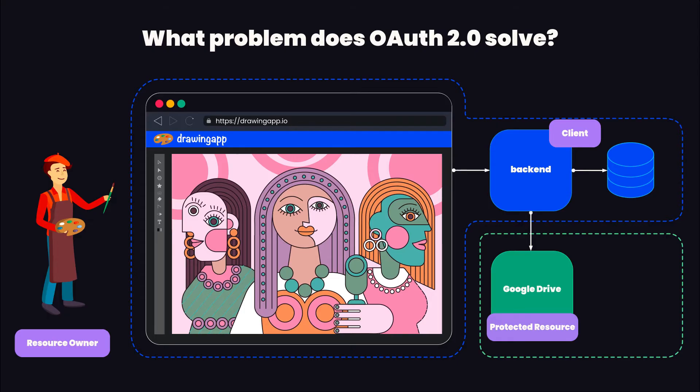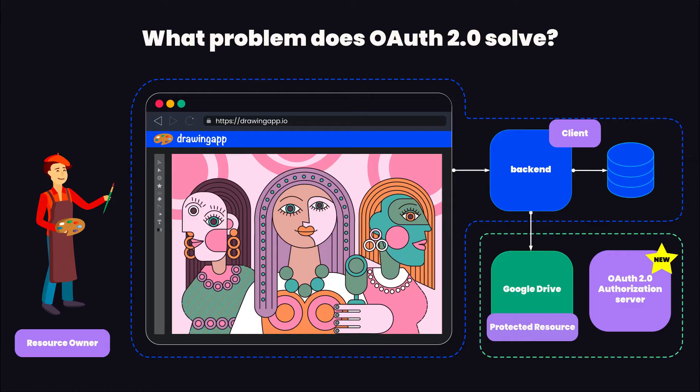OAuth also introduces a new entity called the authorization server. The OAuth 2.0 authorization server issues access and refresh tokens and gives third-party applications limited access to the protected resource. Think of it like a bouncer who decides who is going to get access and also what API permissions you're going to get.